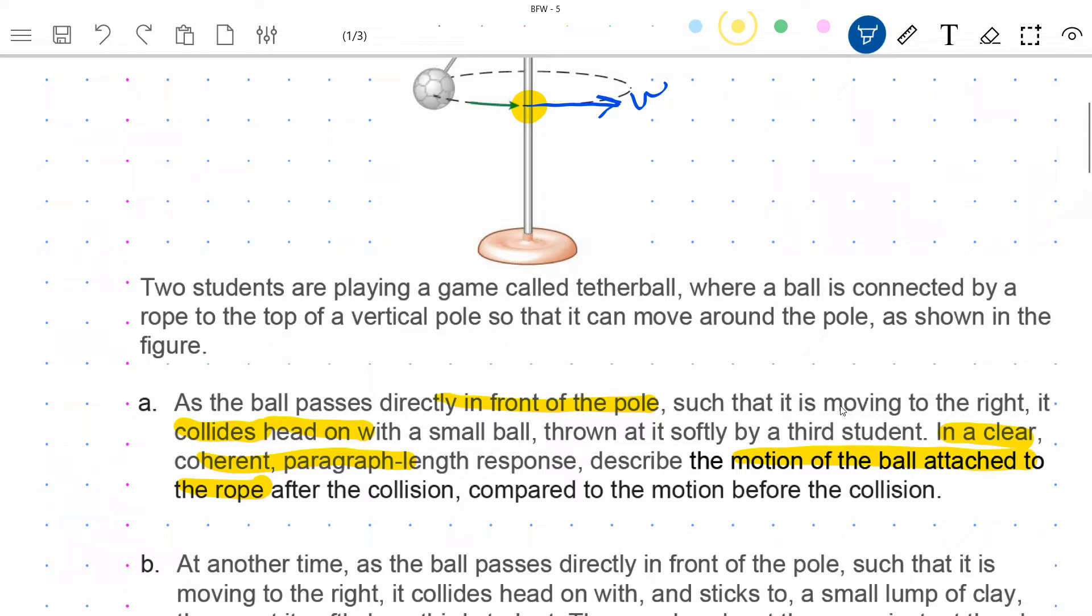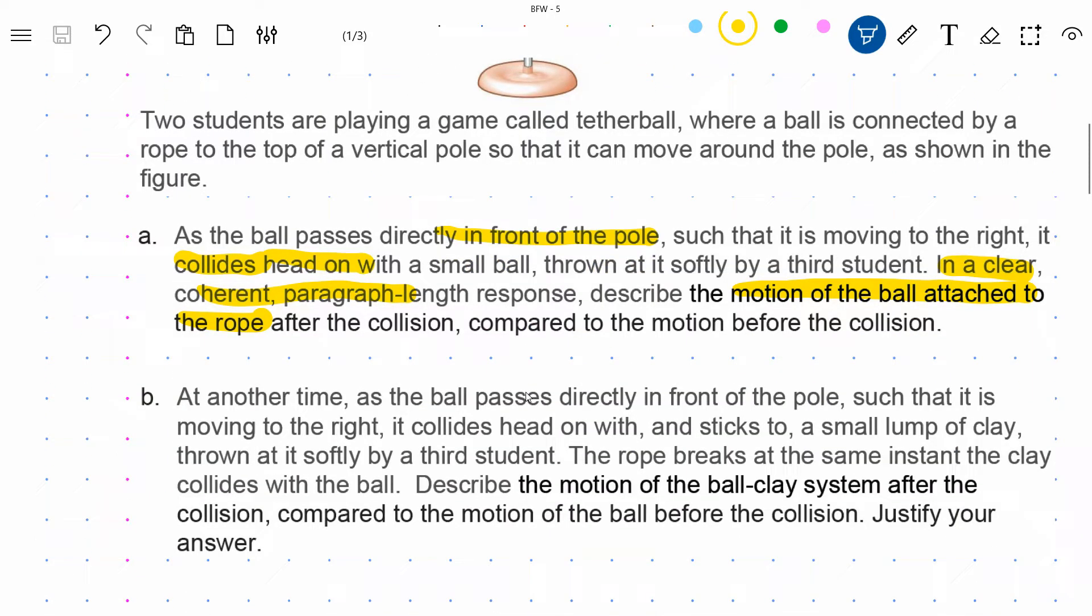So there's very little said here in part A. It doesn't look like a very big question, but again, being a paragraph length answer, I'm going to try to bring in not everything I can think of, but as many relevant details as I can. I'll show you my answer in a moment, but let's just kind of introduce part B here, and then I'm going to roll into my full solution, which I've written up ahead of time. So part B just kind of continues this. It says at another time, so imagine this is like a separate trial or something like that, at another time as the ball passes directly in front of the pole, so the same starting conditions, such that it's moving to the right, it collides head on with and sticks to a small lump of clay. So that's different straight off the bat, because previously it wasn't described to us exactly the nature of the collision. This one, it actually specifies that it sticks, so that immediately has important connotations for the physics. But more importantly, something really different happens. The rope breaks at the same instant of the collision. So we are asked again to describe the motion of the ball-clay system this time after the collision compared to before the collision and to justify our answer.